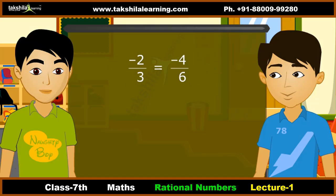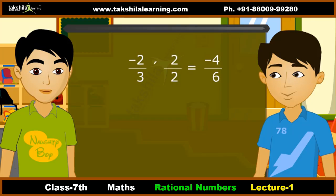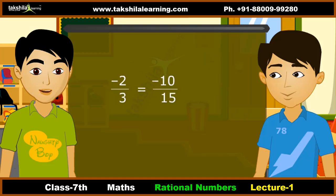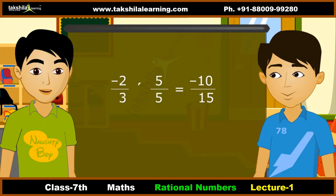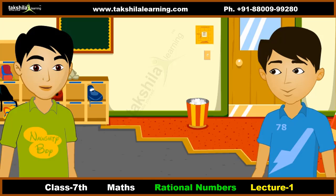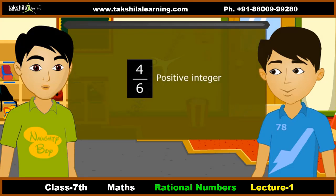When we multiply the numerator and denominator of a rational number by the same non-zero integer, we obtain another rational number which is equivalent to that number. For example, minus 2 by 3 is equivalent to minus 10 by 15, because when we multiply the numerator and denominator by 5 we get minus 10 by 15. A rational number with both positive numerator and positive denominator is called a positive rational number.